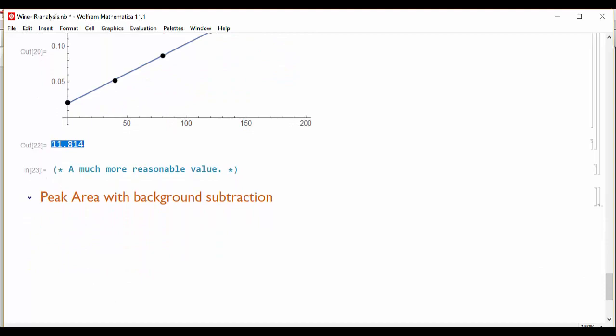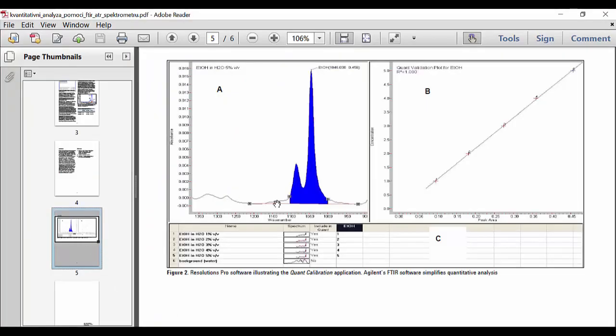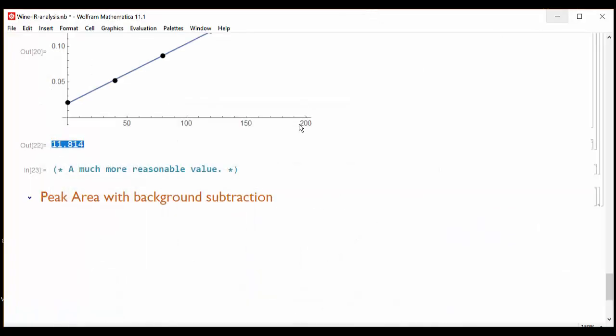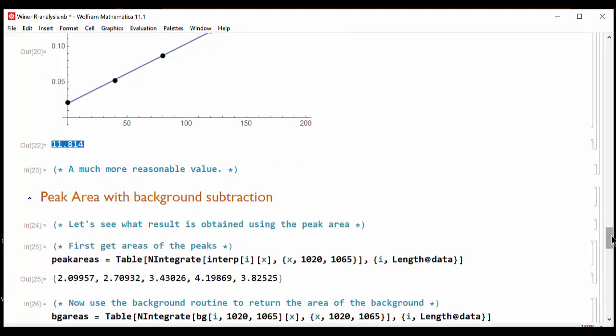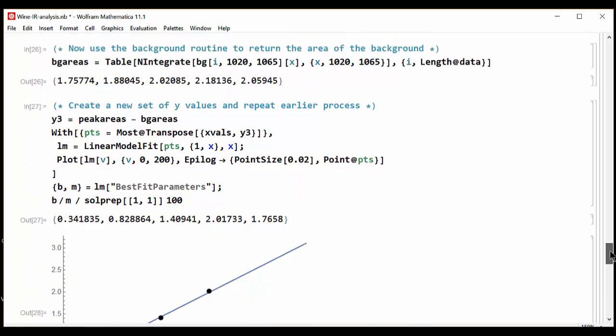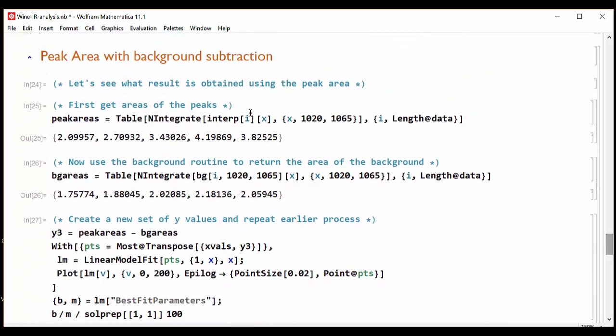Now if we saw in the application note, they are actually performing an area calculation as opposed to a peak calculation, so I am going to try the area calculation to see how that works. Building upon the previous work, now what we need to do is create an area function. So we are integrating the plot from 1020 to 1065. So those are the limits of the one peak.